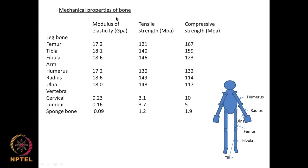Let us look at the mechanical properties of the bone — these change quite a lot depending upon the type of bone. For the leg: the femur (thigh bone) and the fibula and tibia show differences in modulus of elasticity and compressive strength. The femur has a very high compressive strength whereas the fibula has very low compressive strength.